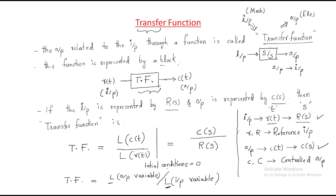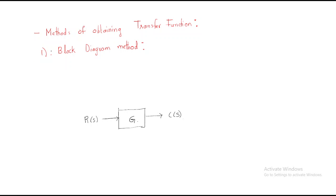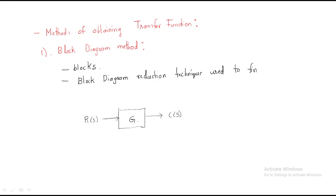Every system has a transfer function, because it gives the relation between input and output. In order to find out the transfer function, we have two methods. The first method is the block diagram method, and the second method is the signal flow graph method. In the block diagram method, each element of the control system is represented by blocks. The block diagram reduction technique is used to find out the transfer function.